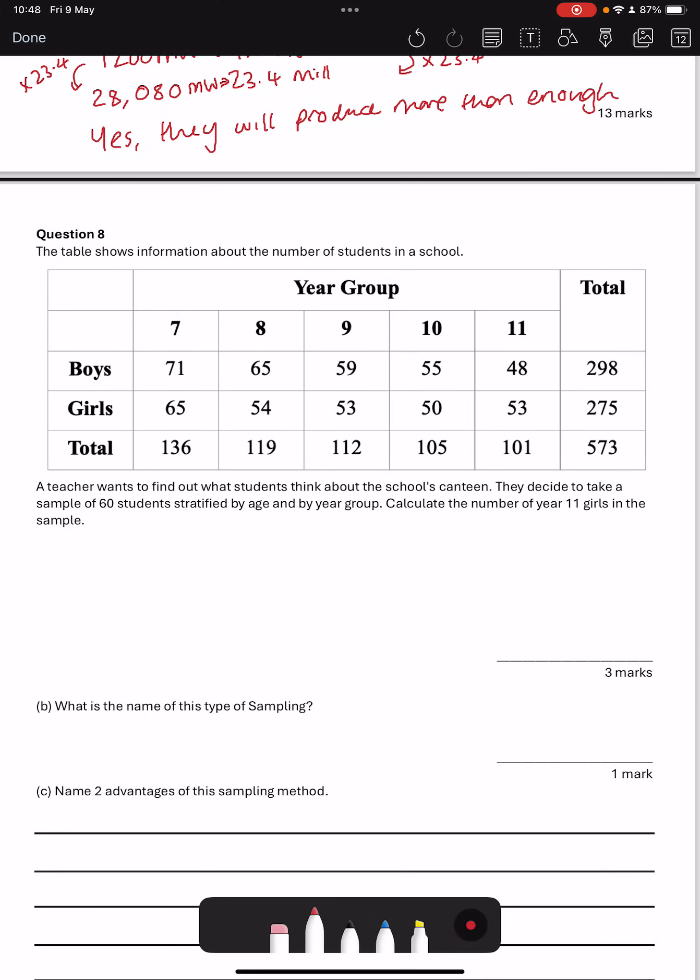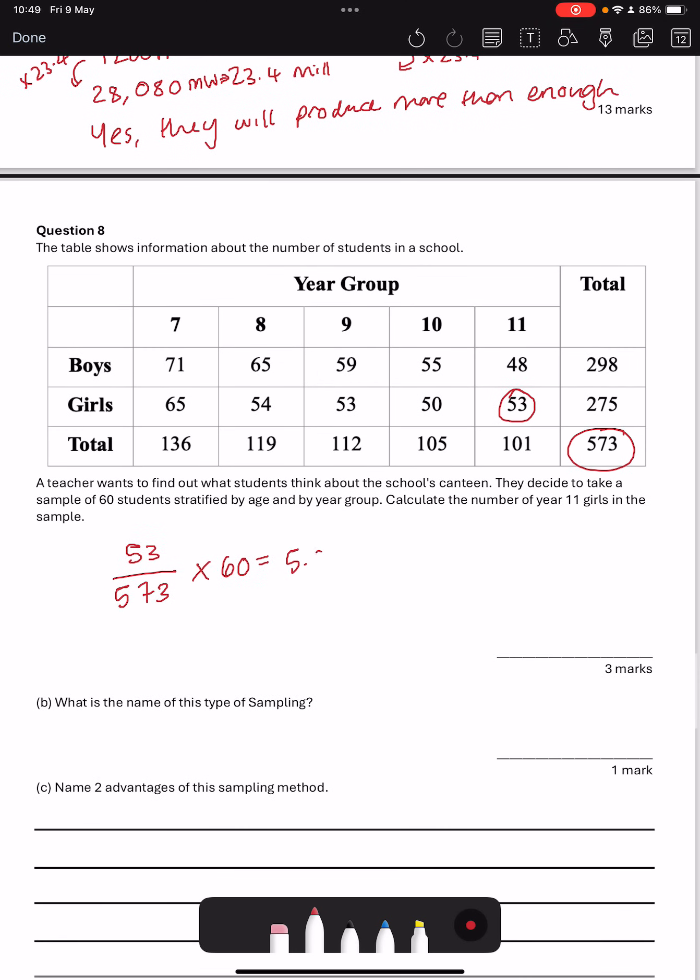Question 8. The table shows some information about the number of students in a year group. A teacher wants to find out what students think about the school's canteen. They decide to take a sample of 60 students stratified by age and by year group. Calculate the number of year 11 girls in the sample. There are 53 year 11 girls. The total number in the whole school is 573. And my sample size is 60. So I want that fraction of 60. Type it into my calculator.